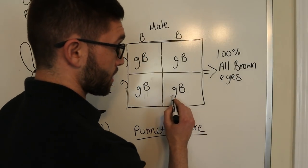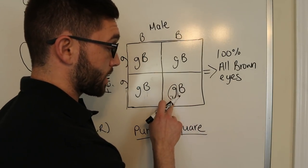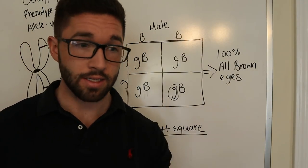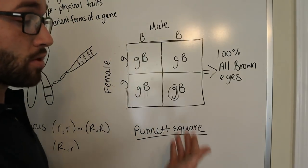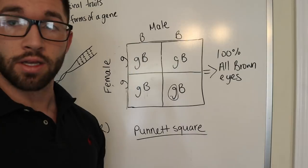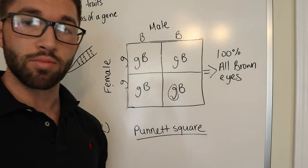And we know that it's dominant because even though the offspring has this g, this lowercase g, it's not phenotypically expressed. We can't physically see the trait in our offspring. So, yes, genotypically they do carry a green-eyed allele, but phenotypically, they express only brown eyes.